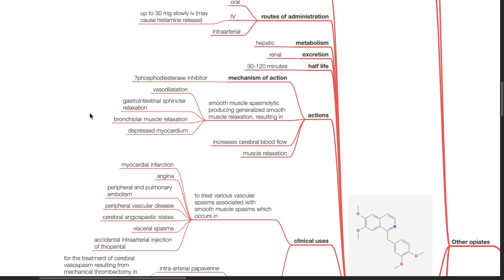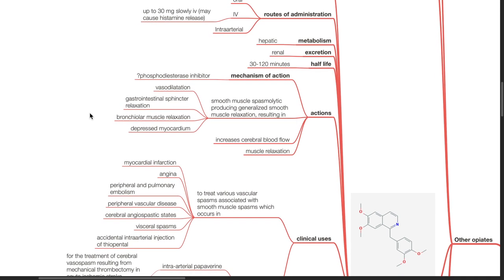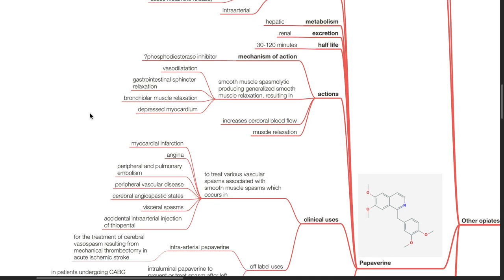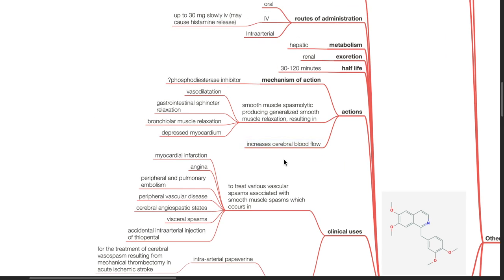Mechanism of action. It probably acts as a phosphodiesterase inhibitor. It is a smooth muscle spasmolytic producing generalized smooth muscle relaxation resulting in vessel dilation, GI sphincter relaxation, bronchial muscle relaxation and depressed myocardium. It causes increased cerebral blood flow.